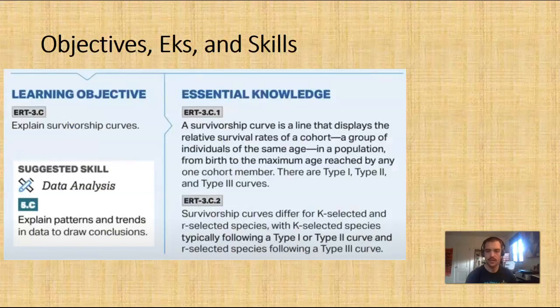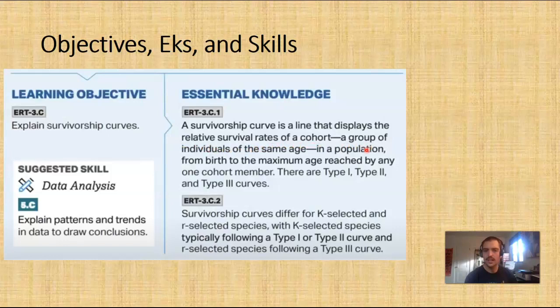The objectives, essential knowledge and skills for today: we want to be able to explain survivorship curves. The essential knowledge is that a survivorship curve is a line that displays the relative survival rates of a cohort — a group of individuals of the same age — in a population from birth to the maximum age reached by any one cohort member. There are Type 1, Type 2, and Type 3 curves, and survivorship curves differ for K selected and R selected species, with K selected species typically following a Type 1 or Type 2 curve and R selected species following a Type 3 curve.